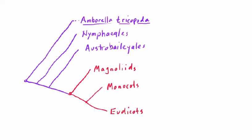Now, looking at how we've laid out these three groups of mesangiosperms: should we expect to see the most primitive characteristics in the Magnoliids, the Monocots, or the Eudicots? The Magnoliids are the most basal of the three, and while this doesn't guarantee anything, it does put them in a position more likely to have retained the primitive characteristics. It turns out that a lot of the characteristics we see in the ANA grade plants, inferred to be primitive, are also shared with the Magnoliids.